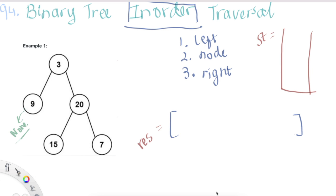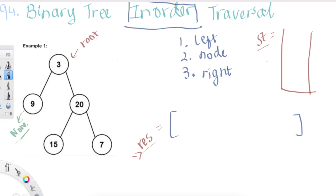To solve this problem in an iterative way, we need two things: we need a stack, which we are going to pop our values out of, and we also need the result list that we're going to return. What's going to happen is we are going to start from the root and keep traversing to the leftmost node. If I had to write the pseudocode, it would be something like this.